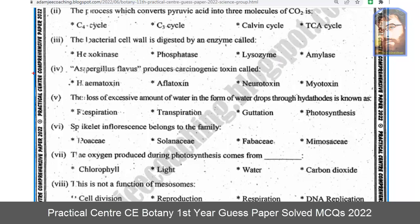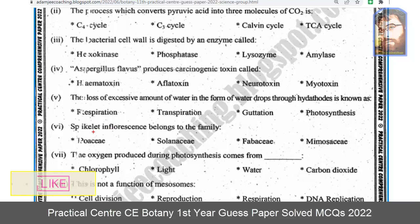Number four: Aspergillus flavus produces a carcinogenic toxin called aflatoxin. Number five: the loss of excessive amount of water in the form of water drops through hydathodes is known as guttation. Number six: spicate inflorescence belongs to the family Gramineae.